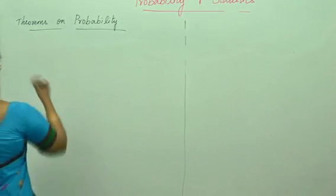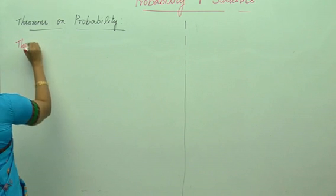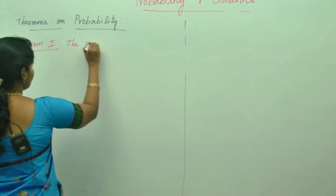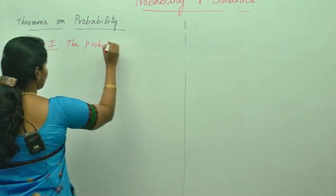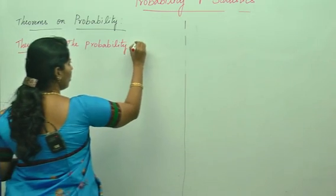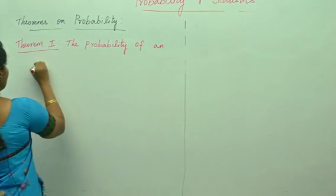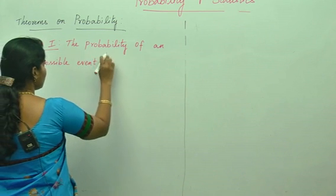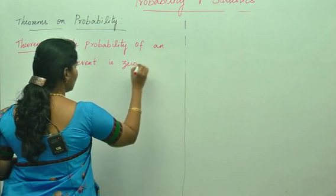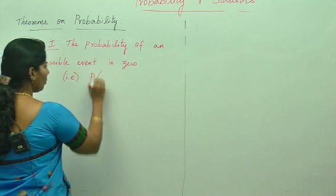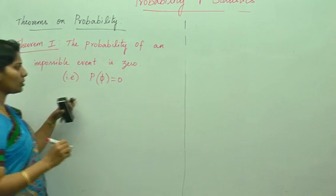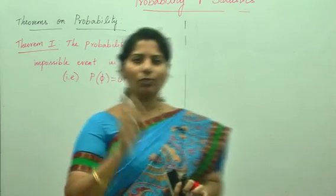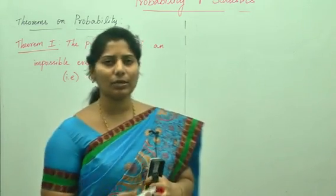First, Theorem 1: The probability of an impossible event is 0. That is, P(φ) = 0. Which one do we call the impossible event? Phi. And S is the certain event. You should know this for probability. Always we call phi as the impossible event, and S as the certain event.